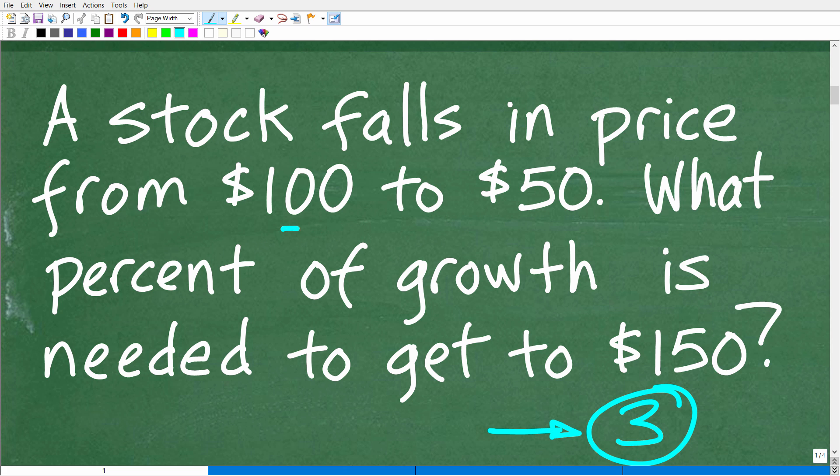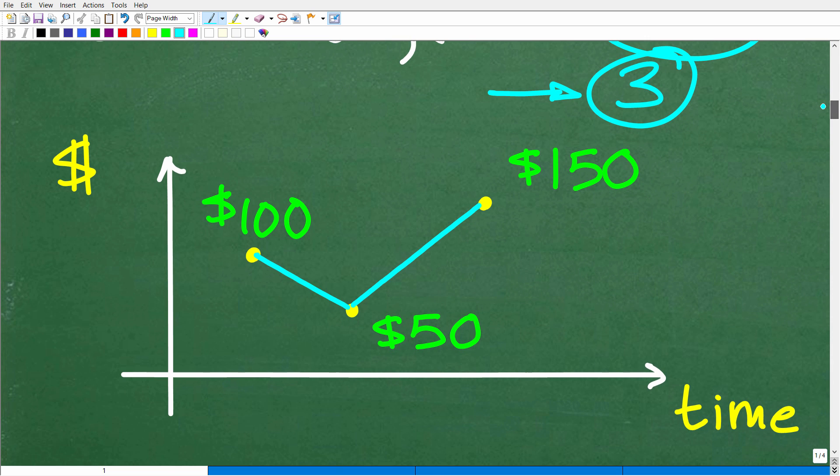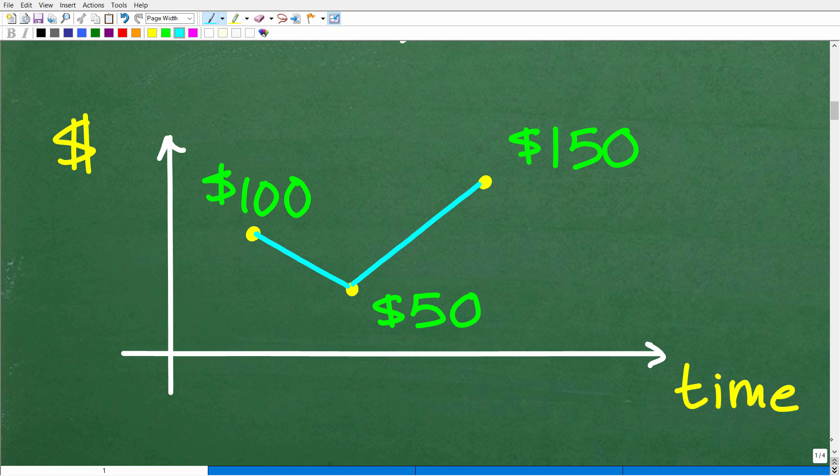Read the problem three times to really make sure you understand what's going on and you understand the precise nature of the question, right? So we have this stock. It falls in price. It goes from here to here. But we want to see what is the percent of increase needed to go from this price to this price. All right, so once you have a good sense of the problem, what you want to do is model the problem. And there's all kinds of different creative ways to come up with a model. But let me go ahead and show you what I did. I like to kind of visualize what's going on because when you see something, okay, there's that old adage, a picture is worth a thousand words. And indeed, it is.